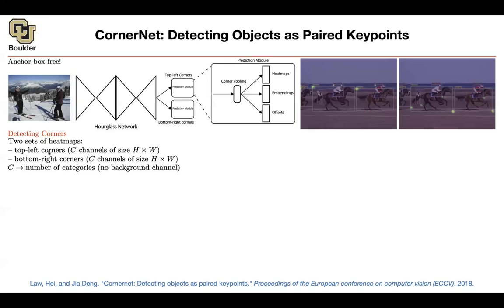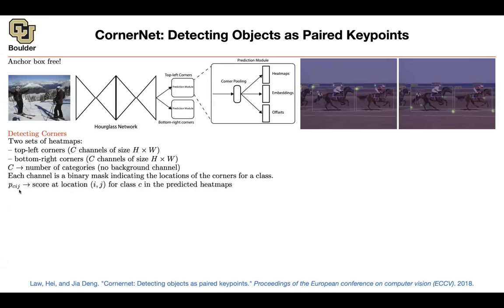One heat map predicts the top-left corners and the other predicts the bottom-right corners, followed by post-processing. Each channel is a binary mask — like what you do in pose estimation — indicating the location of corners for a class. The neural network outputs per-pixel, per-channel scores, giving you the predicted heat map.